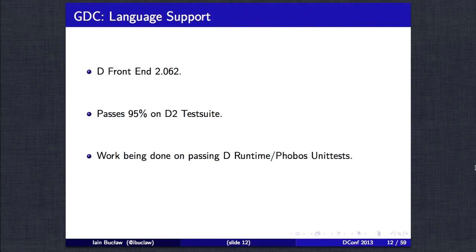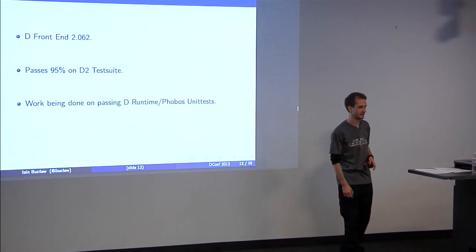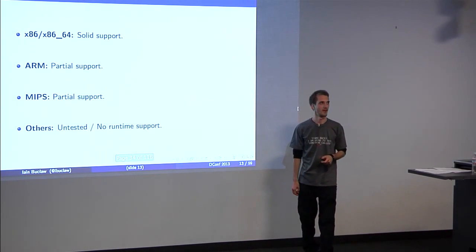So the current status of GDC. As I said, we support the current release, which is the 2.062. Test suite, 95% of tests—well, bearing in mind that in this, we actually removed quite a few tests that aren't relevant. We are passing about 95% of them. And although that says work being done on passing D runtime Phobos unit tests, I have weeded out the most difficult ones that cause the compiler to crash. So hopefully that would be no problem.